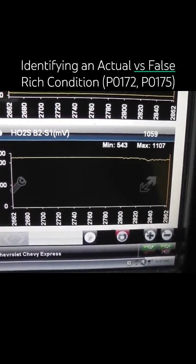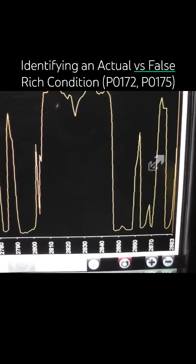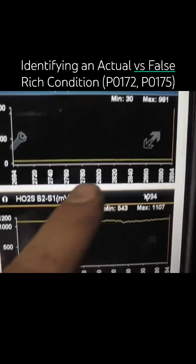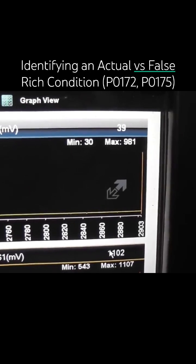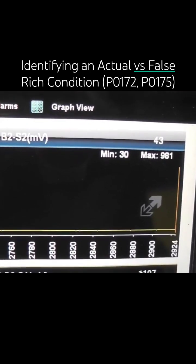One of the methods we're going to use is to look at the downstream O2 on the same bank, downstream bank two sensor two. That's this one right here.